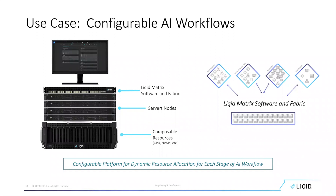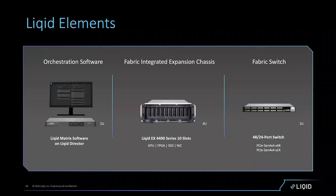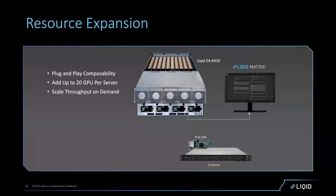Let me walk through the physical layer and show you the building blocks. The first building block is our Liquid Matrix software — this does the orchestration and composability. The next is our EX4400 expansion chassis, a 10-slot PCIe expansion chassis where we deploy GPUs and other devices. It is not a server — just a PCIe expansion chassis housing external PCIe elements. The last building block is our PCIe fabric switch, which allows you to scale multiples of devices and servers into a larger topology.